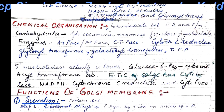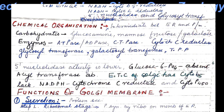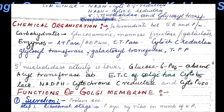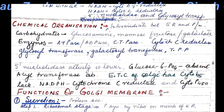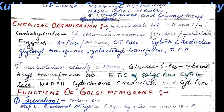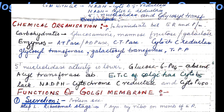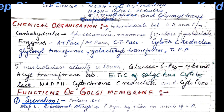Chemically, Golgi bodies are intermediate between ER and plasma membrane. Carbohydrates found in Golgi membranes include glucosamine, mannose, fructose, and galactose. Enzymes present include ATPase, cytochrome c reductase, glycosyl transferase, galactosyl transferase, and thiamine pyrophosphatase. 5-nucleotidase activity is lower, glucose-6-phosphatase is absent, and acyl transferase is absent. The electron transport chain of Golgi has cytochrome b5, NADPH cytochrome c reductase, and cytochrome P450.